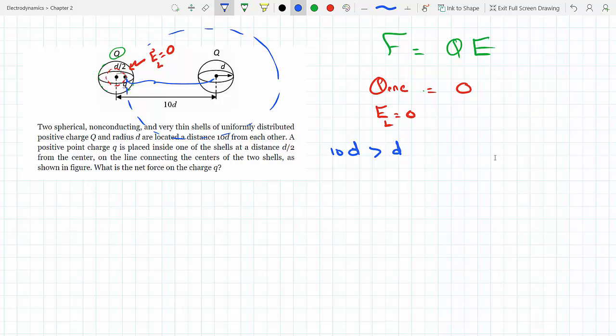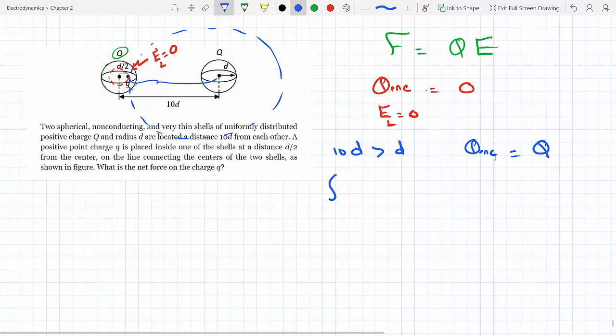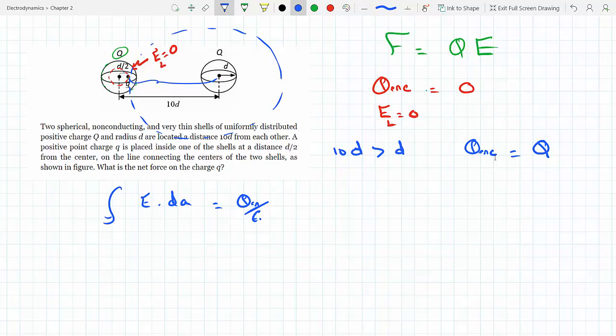Right around this, I know I'm enclosing capital Q. My Q enclosed that's coming from the right shell, Q enclosed would equal Q. Therefore if I apply Gauss's law quickly, I would get E dot dA equals Q enclosed over epsilon.